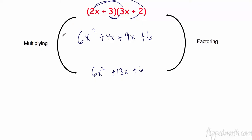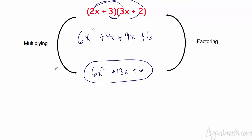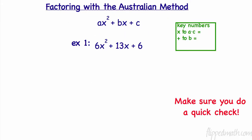So when we go this direction it is multiplying, and when we go backwards it is called factoring. We're going to learn how to take a quadratic polynomial and go backwards, factoring it into a binomial times a binomial using something called the Australian method.